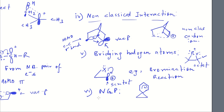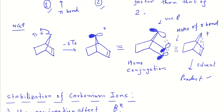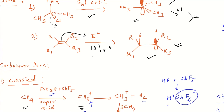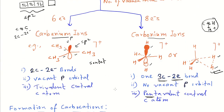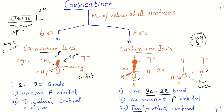The last stabilization example is neighboring group participation, which was already illustrated. These are the basic preliminary concepts about carbocations — of two types, carbenium and carbonium — with their formation and stabilization discussed in this video. Future videos will cover each topic separately in detail. Thank you for watching; please subscribe, share, and like.